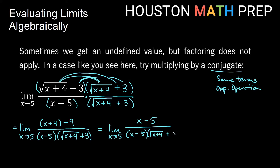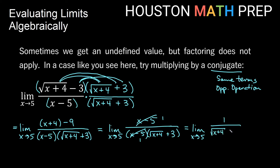After reducing the (x - 5) factors, we get the limit as x approaches 5 of 1 / (√(x+4) + 3). Now plugging in 5 won't give us 0 in the denominator. We get 1 on top, and √(5+4) + 3 = √9 + 3 = 3 + 3 = 6 on the bottom. So the limit equals 1/6.